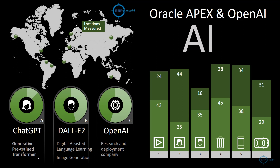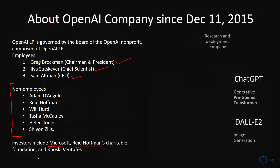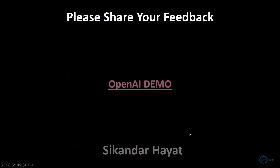You write a text, it understands, and it responds — it's a sort of chatbot. The OpenAI team includes President Greg Brockman, Chief Scientist, and Sam Altman as CEO. Investors include Microsoft, Reid Hoffman, charitable foundations, and Khosla Ventures.